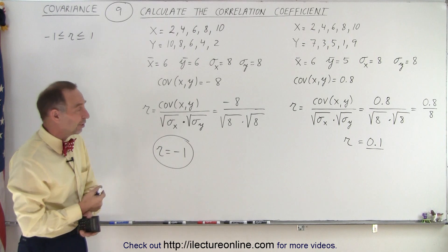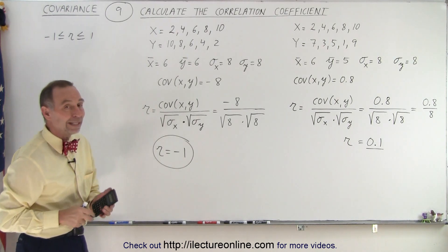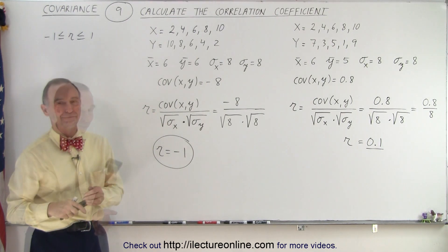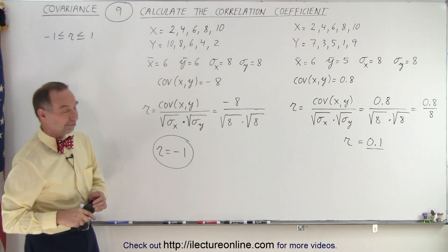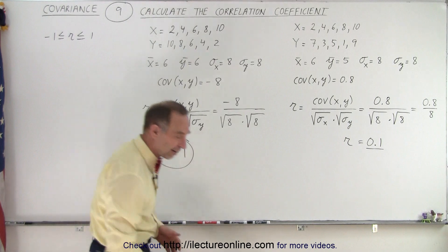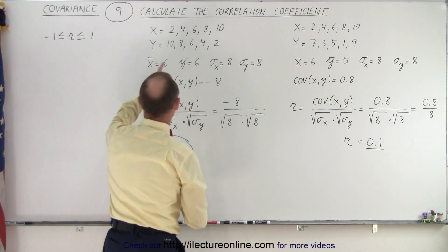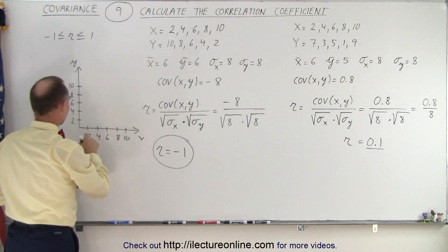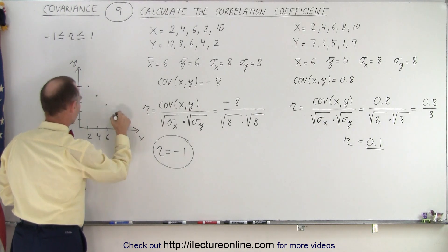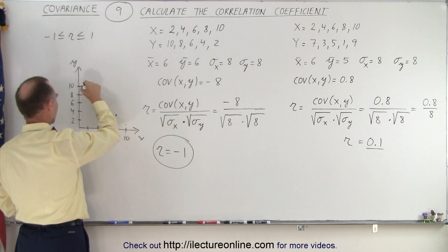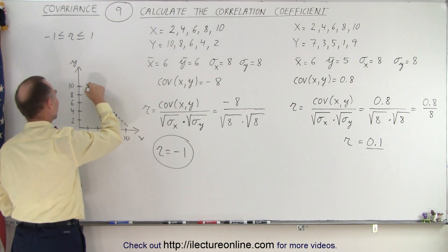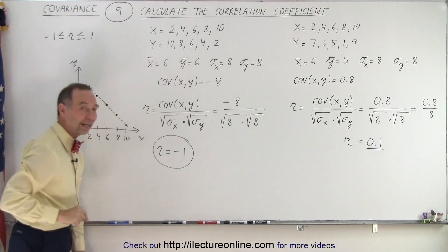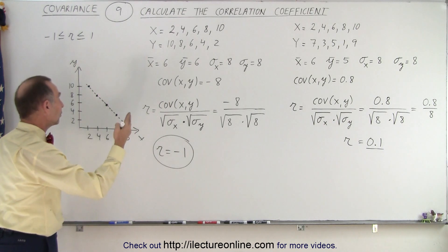That is why we need to use the correlation coefficient to be absolutely sure how well two data sets correlate. Let's throw a graph down and see what that looks like. When we graph this second data set, when x is 2, y is 10, and when x is 10, y is 2. If you connect all those dots, they sit perfectly on a straight line, which is why you'd expect a perfect correlation — in this case negative 1, because one is increasing while the other is decreasing.